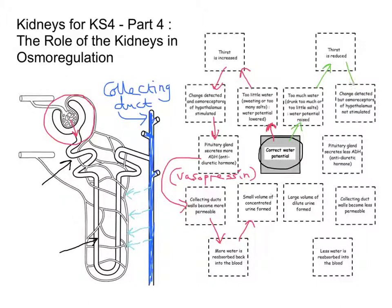That change is again detected, but this time the osmoreceptors of the hypothalamus are not stimulated. Because they're not stimulated, we're not getting the release of ADH — there's no antidiuretic hormone being produced. So if that's the case, those aquaporins — those proteins — don't go into the membranes of the collecting duct. They are held within little vesicles within the cell, and only move out into the membrane when the body is trying to reabsorb water.